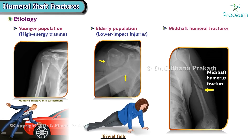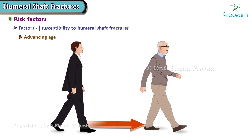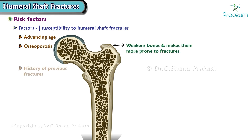Mid-shaft humeral fractures account for about 2% of all fractures. Certain factors increase the susceptibility to humeral shaft fractures. These include advancing age, osteoporosis — a condition that weakens bones and makes them more prone to fractures — and a history of previous fractures.